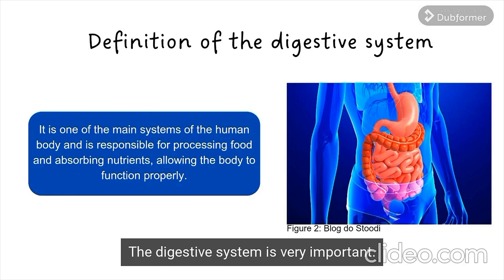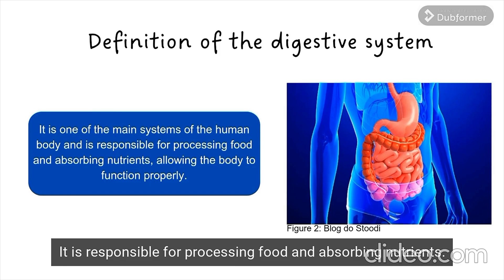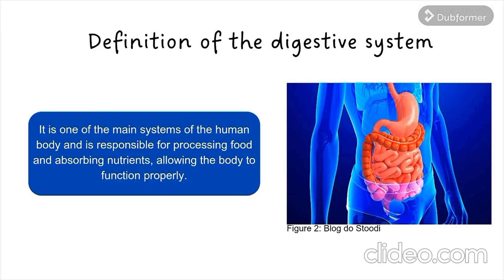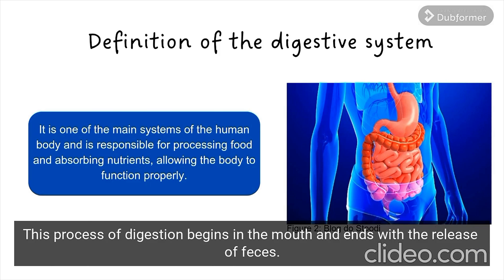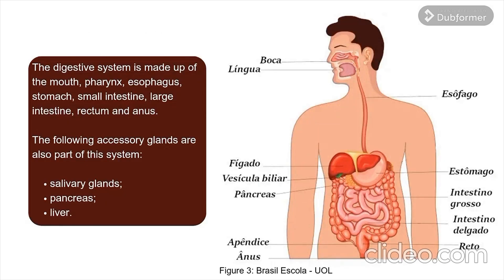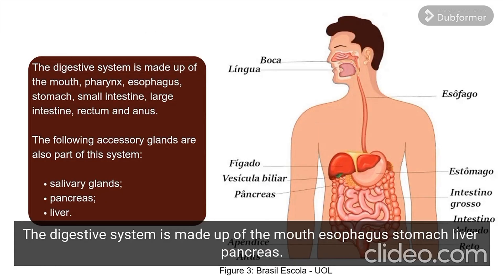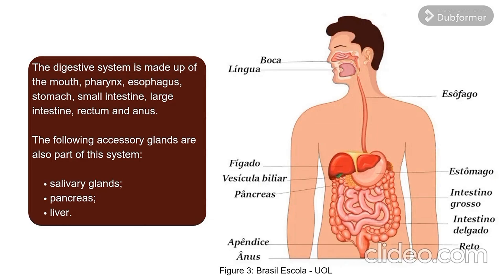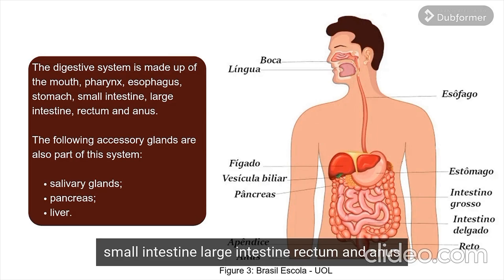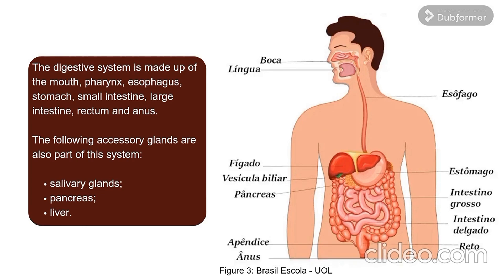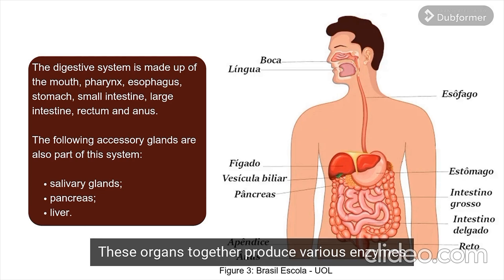Definition of the digestive system. The digestive system is very important. It is responsible for processing food and absorbing nutrients. This process of digestion begins in the mouth and ends with the release of feces. The digestive system is made up of the mouth, esophagus, stomach, liver, pancreas, small intestine, large intestine, rectum and anus. These organs together produce various enzymes to ensure the correct processing of these foods.